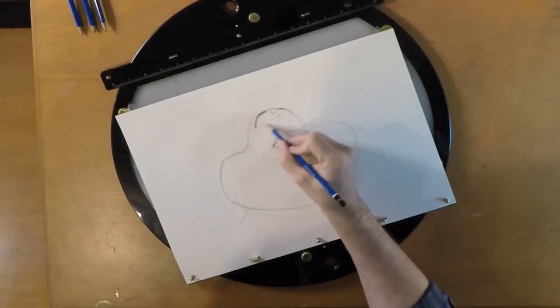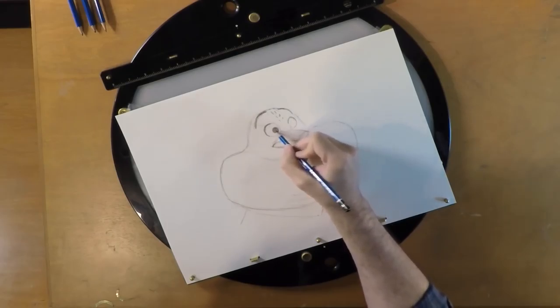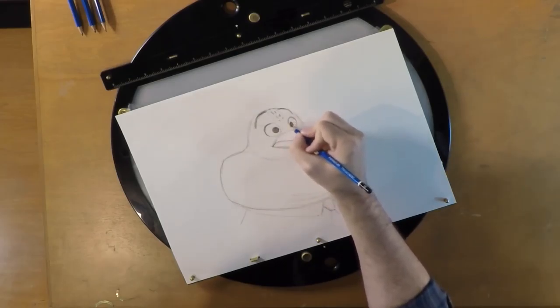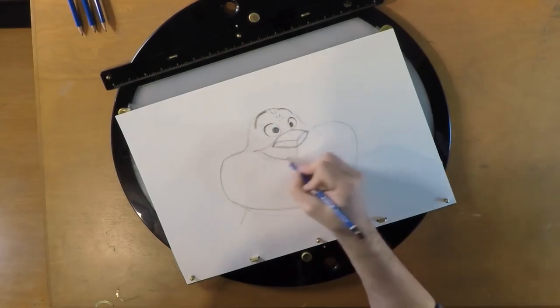Now his eyes, he's got a little bit of an eyelash. They come down to a point right where we drew those lines. Klawhauser is always happy so we're going to draw a big smile on him. Draw a line coming off his nose.